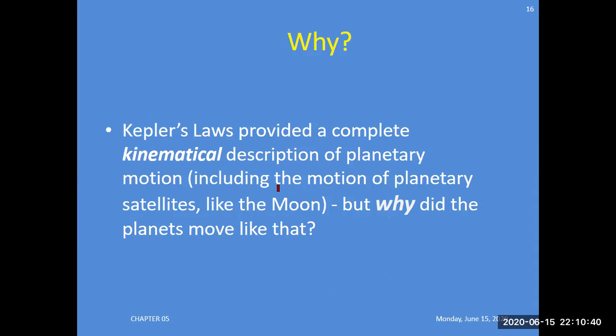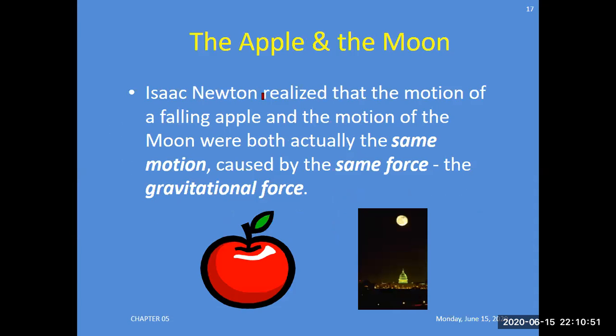Kepler's laws provided a complete kinematic description of planetary motion, including the motion of satellites like the Moon. But why did the planets move like that? What's the reason? The Apple and the Moon: Isaac Newton realized that the motion of a falling apple and the motion of the Moon were both actually the same motion, caused by the same force—the gravitational force.